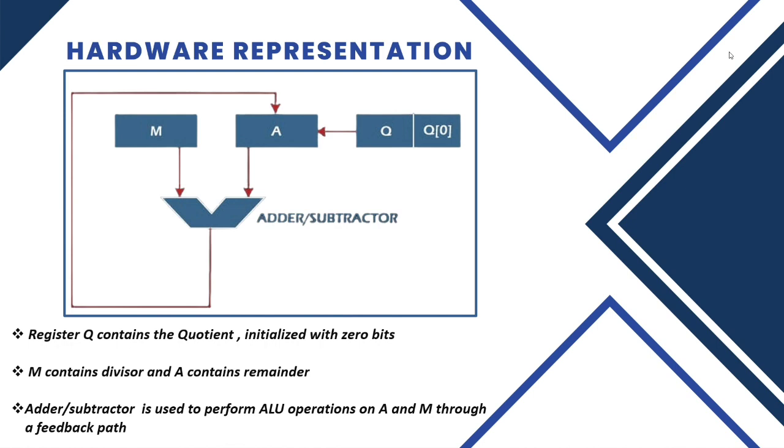The third is Q register. Q contains the quotient and it is initialized with 0. In the above block diagram, we can see a V-like structure, it is nothing but an adder or subtractor. It is used to perform ALU operation on A and M through a feedback path.